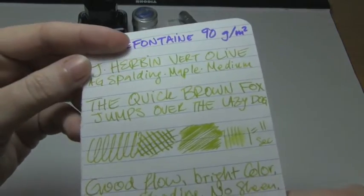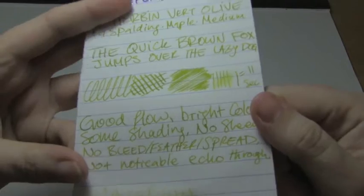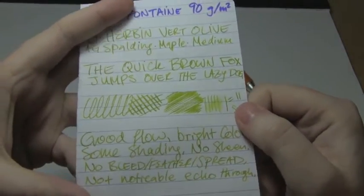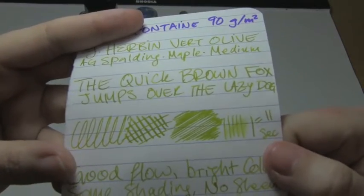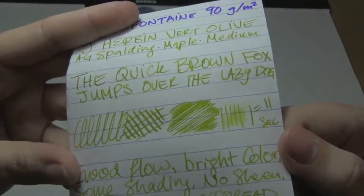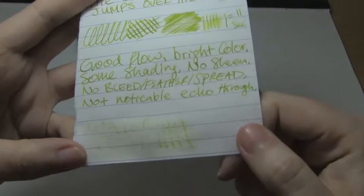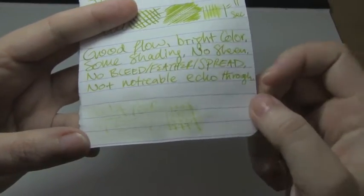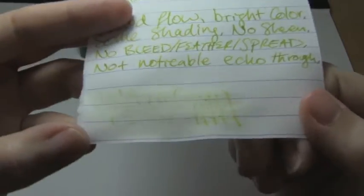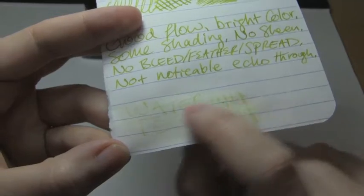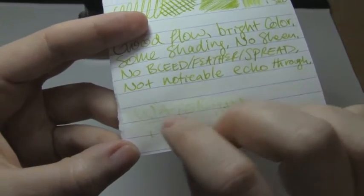So, from the top down in density, Clairefontaine 90 grams per square meter. 11 seconds to dry, which really isn't too bad, even though it's a bit on the fine side for a medium nib. I hope this comes through. There is some nice shading, and it's a very bright color. No sheen, no bleed, feather, or spread. The note, the echo isn't that noticeable, though. Water test, it did dye the paper a little bit, and most of it is just straight up gone, and since it's an already really light ink, what little remains is barely legible.